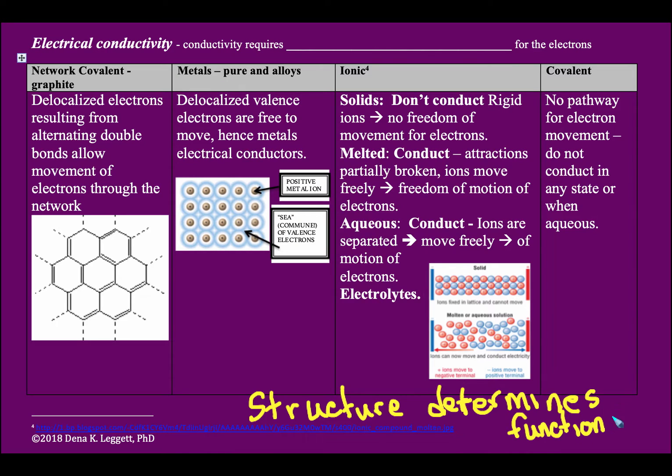So let's look at a few of the different properties we could be looking at. So the first is electrical conductivity. Conductivity requires some sort of freedom of motion or movement of electrons. So if we want to conduct, electrons have to be able to move. And I know that's pretty simplistic, but I think it's a good start as we're understanding how that applies to chemistry.